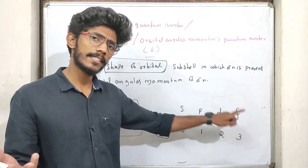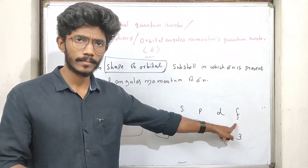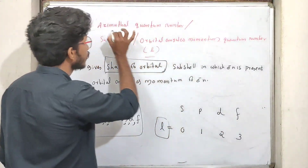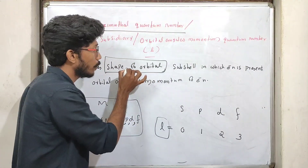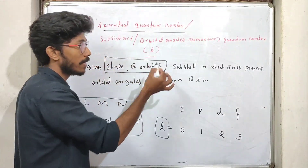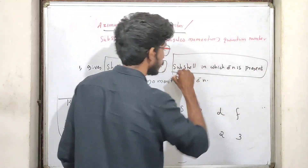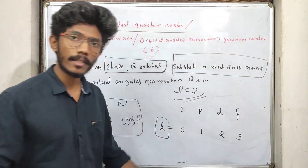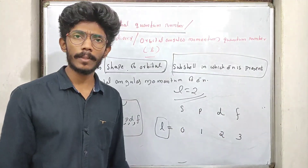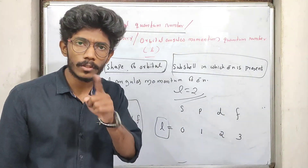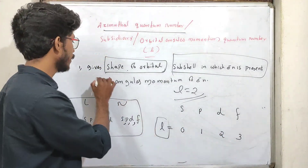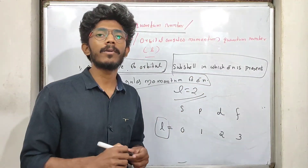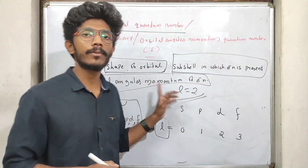We don't call it a simple 3D arrangement. What is the shape of the orbital? What is the sub-shell in which the electron is present? If the L value is 2, it is a D orbital. The azimuthal quantum number also gives the orbital angular momentum.